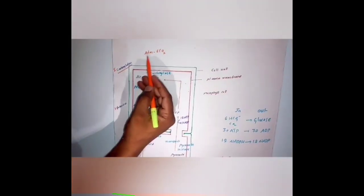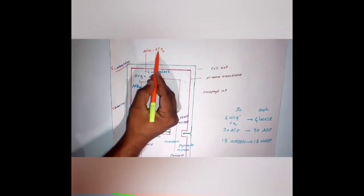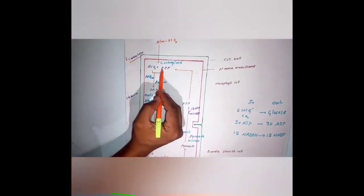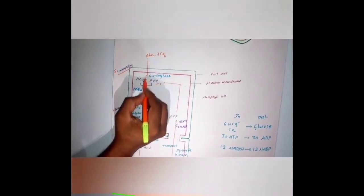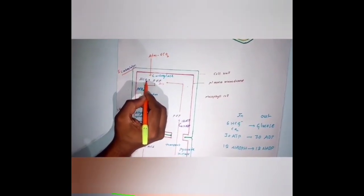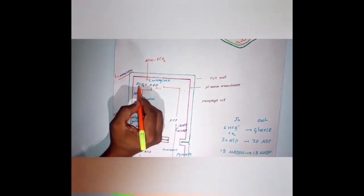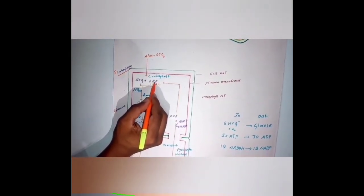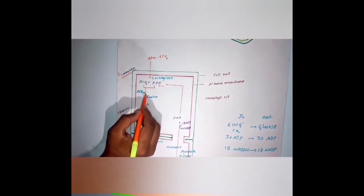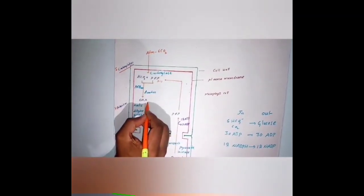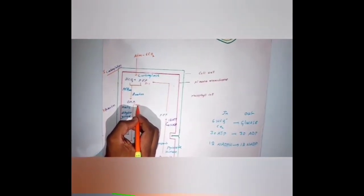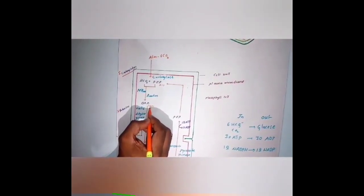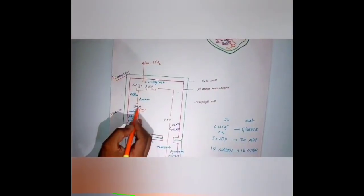Briefly: atmospheric carbon dioxide is taken by phosphoenolpyruvic acid, which has three carbons. Atmospheric carbon dioxide is first converted into bicarbonate ions — carbon dioxide reacts with water to form bicarbonate. Then phosphoenolpyruvic acid reacts with bicarbonate and they are converted into oxaloacetic acid. Oxaloacetic acid has four carbons. The first stable carbon compound in this pathway is a four-carbon compound, hence it is called C4 pathway.